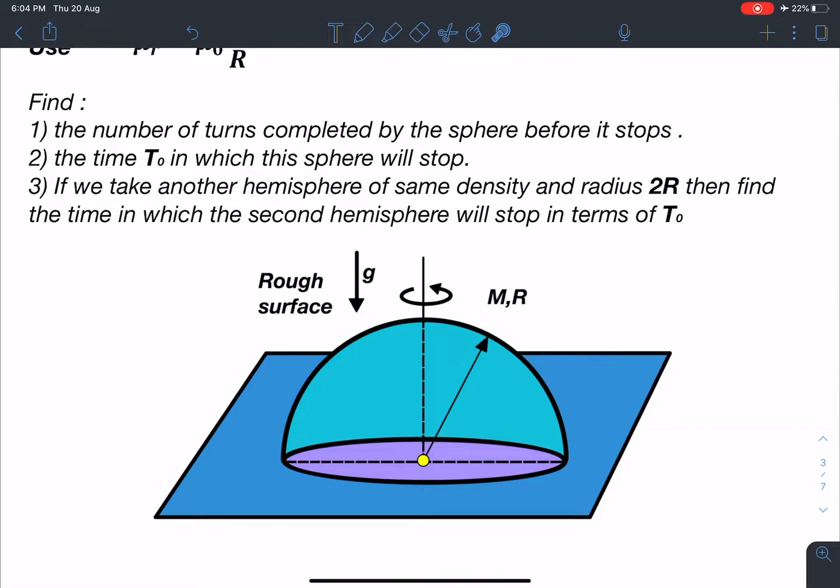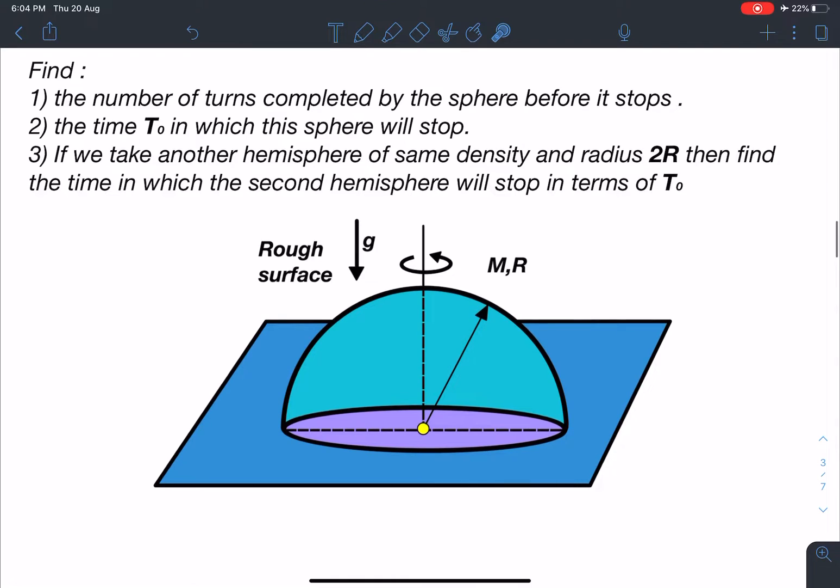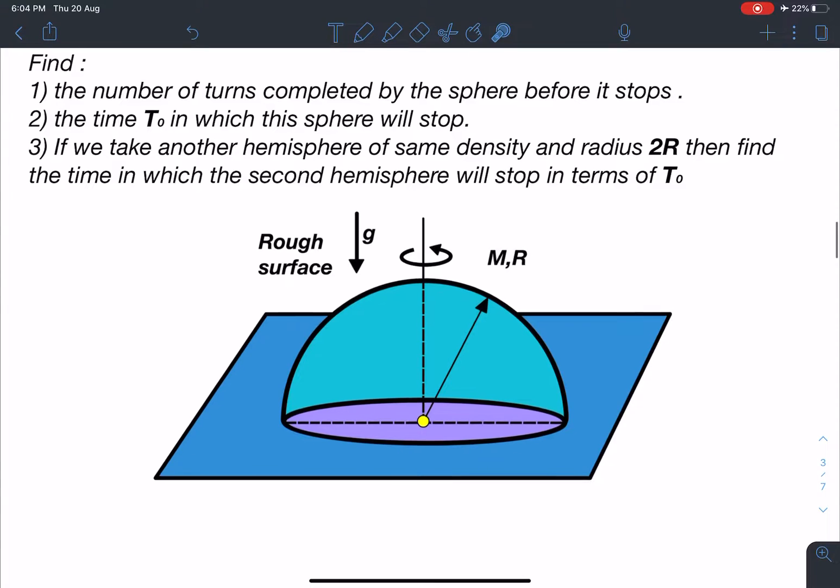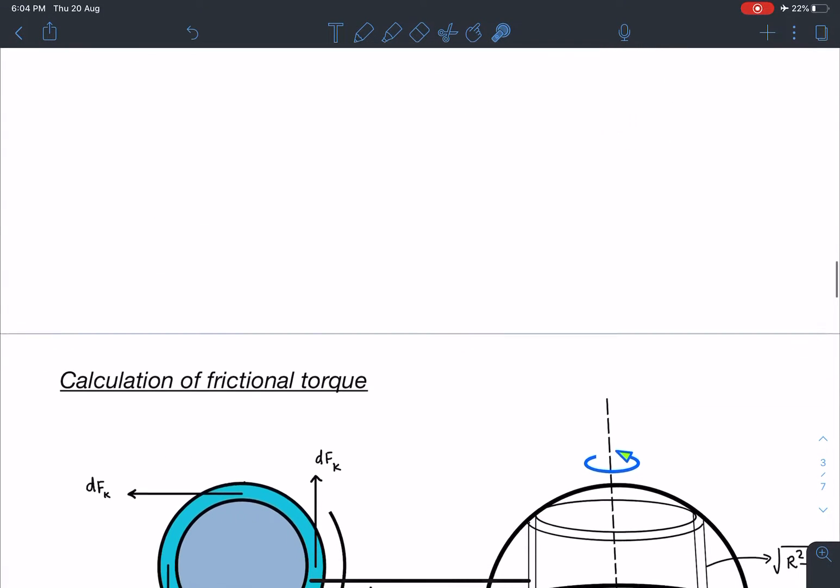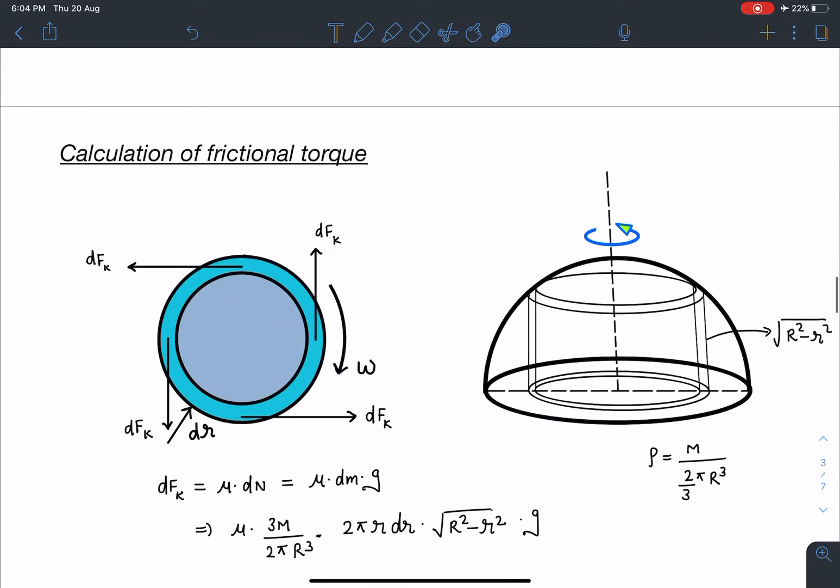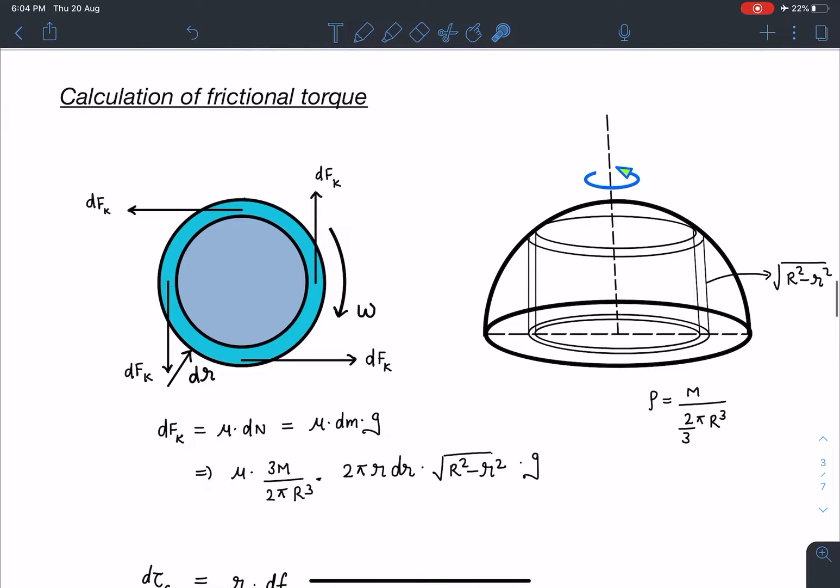So this is the diagram involved. Here the idea of frictional torque we have to discuss in order to get the answers for these parts. So let's start. Calculation of frictional torque: when we are going to place this hemisphere on the rough surface.